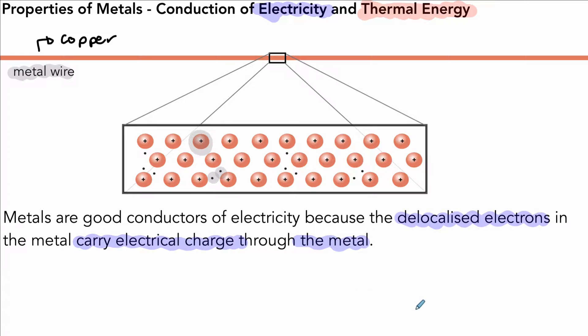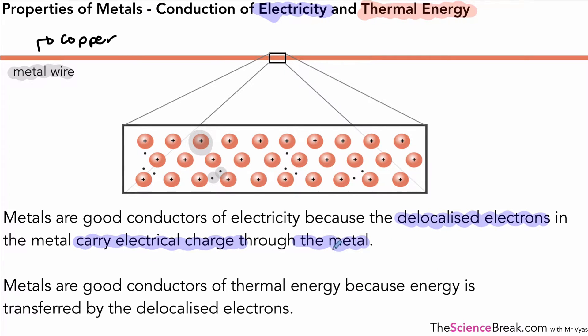Okay, so that's the key points of how you describe the reasoning why metals are good conductors of electricity, but they're also good conductors of thermal energy as well. That means heat energy, and that's because energy can be transferred by those delocalized electrons. So in the same way that they can move to carry a charge, they can also move when they're heated or collide into ions and transfer heat along through that method.